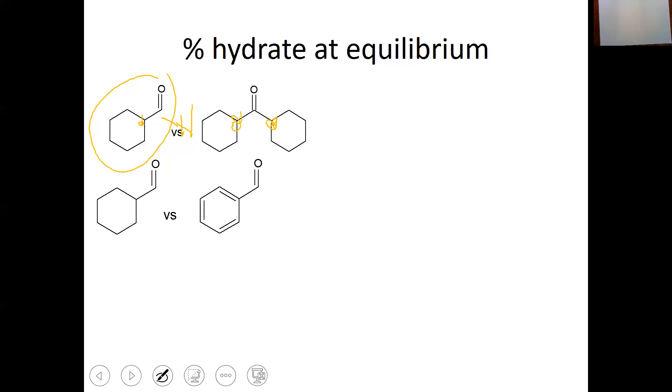What about these two aldehydes? Well, the benzene one can actually donate electrons to make things more stable. Those are resonance arrows. They're pretty illegible. I recognize. But the benzene can donate electrons to help stabilize the partial positive on the carbonyl. So, again, that makes this aldehyde more reactive, more greater percent hydrate at equilibrium.